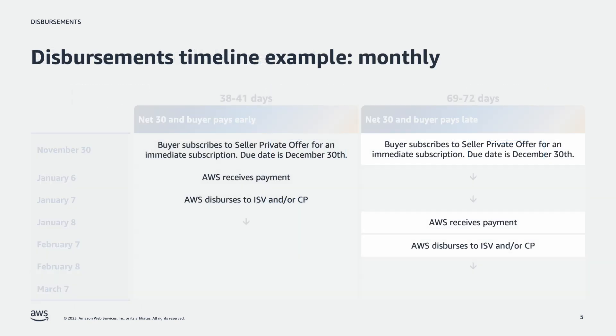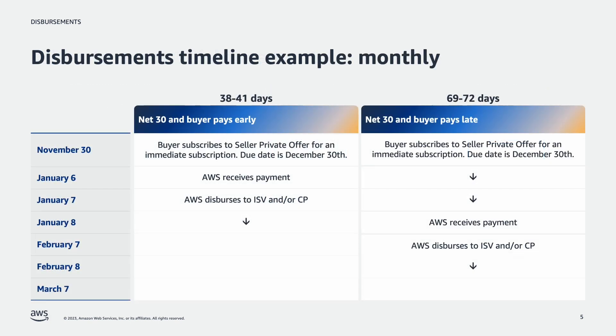Given the previous information, let's review an example where a seller has selected the monthly disbursement preference. In this example, the seller has selected the 7th day of the month for monthly disbursements, and the buyer is subscribed to the seller private offer for an immediate subscription on November 30th, with the due date on Net 30 terms as December 30th. If AWS receives the payment on January 6th, the payment would disburse to the partner on January 7th. If AWS receives the payment after January 7th, AWS will disburse to the partner on the next cycle, February 7th.